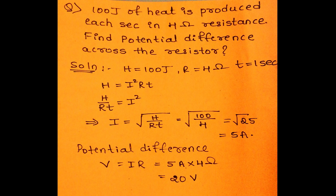Now, let's understand this concept by solving a problem. 100 joules of heat is produced each second in a 4 Ohm resistance. Find the potential difference across the resistor. Here, heat produced H equals 100 joules, R equals 4 Ohm, and time T equals 1 second. According to Joule's law of heating, H equals I² R T. This implies I equals the square root of H upon RT. On solving, we get I equal to 5 Ampere. Then, by applying Ohm's law, V equal to IR, we get potential difference V equal to 20 Volt.